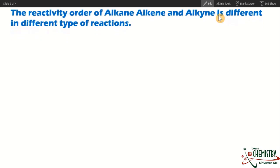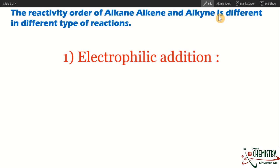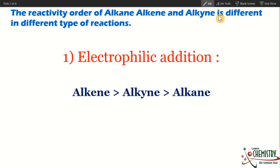The first thing we should understand is that the reactivity order of alkane, alkene and alkyne is different in different types of reactions. Starting with the electrophilic addition reaction: alkenes are most reactive, alkynes are second, and alkanes are the least reactive.